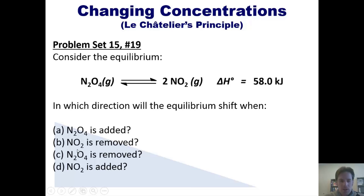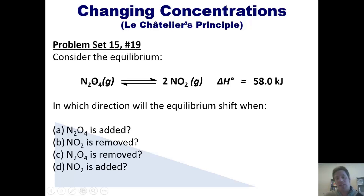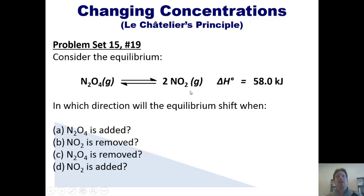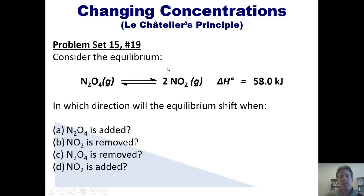Now we'll look at part B. What occurs if NO2 is removed? Well, now I have a gaping hole on the right side of the equation. The equilibrium has to fill in that hole by shifting to the right, converting N2O4 into NO2. That will decrease the amount of N2O4 and restore the amount of NO2 until it restores balance. What happens if I remove N2O4? Now I have a gaping hole on the left side. In order to restore that N2O4 that has been lost, NO2 has to convert into N2O4, so the equilibrium will shift to the left.